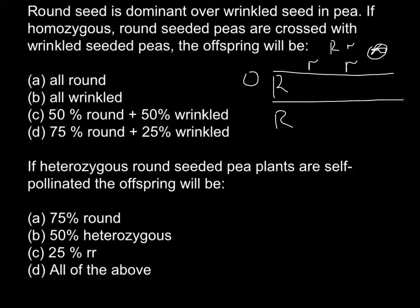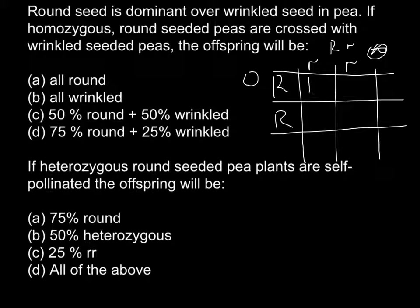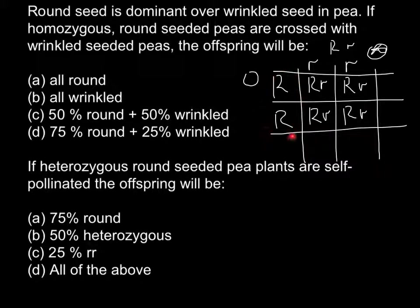Now we can build a Punnett square here. On one parent we have capital R, small r (homozygous round: RR), and on the other side we have the wrinkled parent small r, small r. Each box in the Punnett square gives us capital R, small r. So all the offspring are going to be of one genotype and one phenotype, because capital R is present in each box. The offspring are heterozygous — different from the dominant homozygous parent — but phenotypically they look the same.